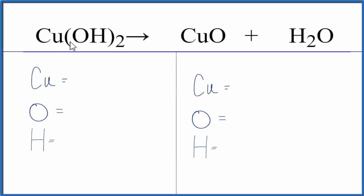In this reaction we have copper 2 hydroxide decomposing into copper 2 oxide and water. This will happen if you add heat to the copper 2 hydroxide. So let's balance the equation by adding the atoms up first.